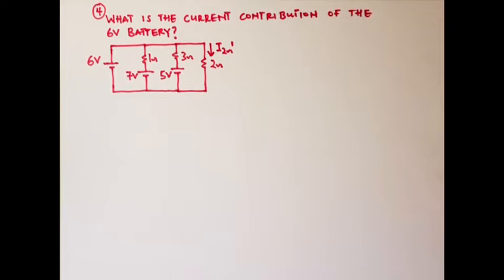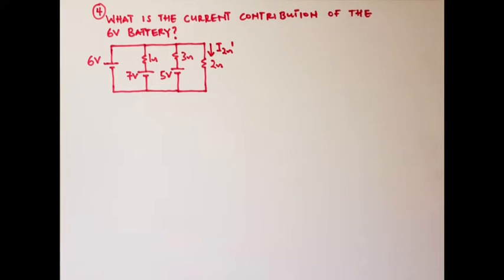In our fourth example we are going to solve this problem. This is an applied electricity examination question from 2011, and we are to use superposition theorem to find the current flowing through the two ohm resistor.